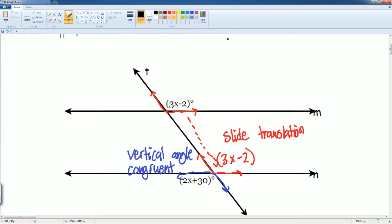We saw it is 2x plus 30 is gonna be equal to 3x minus 2 because they are congruent, because they are vertical angles. Now once we set this up, now we can solve.